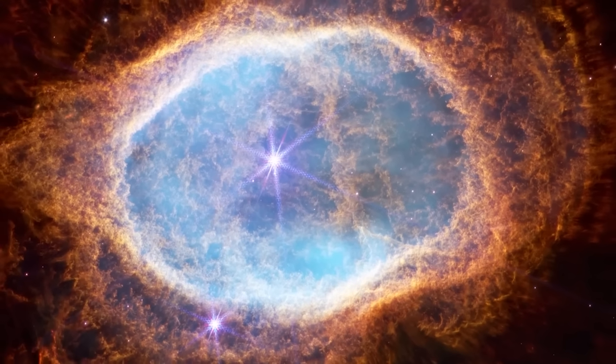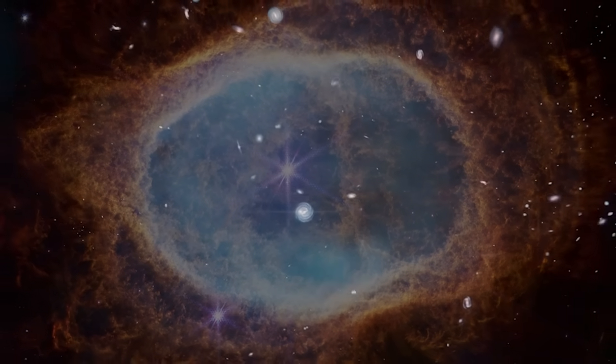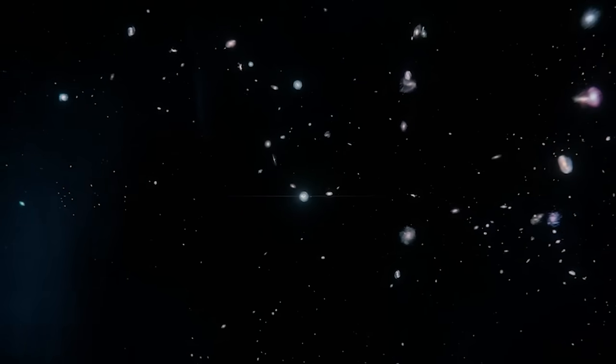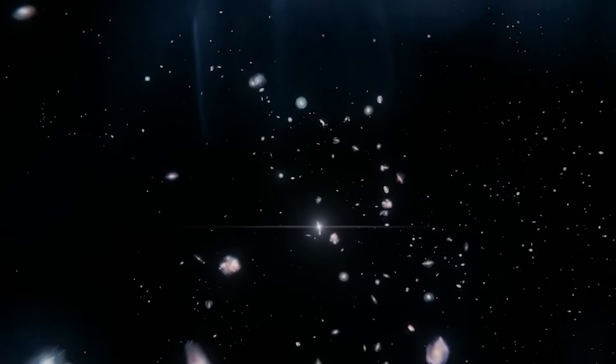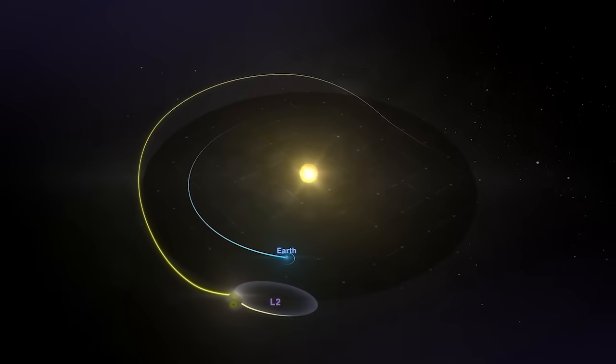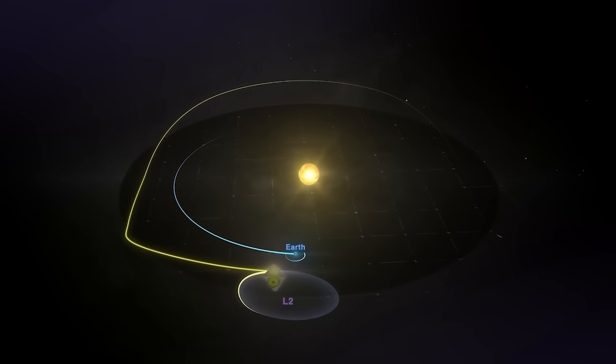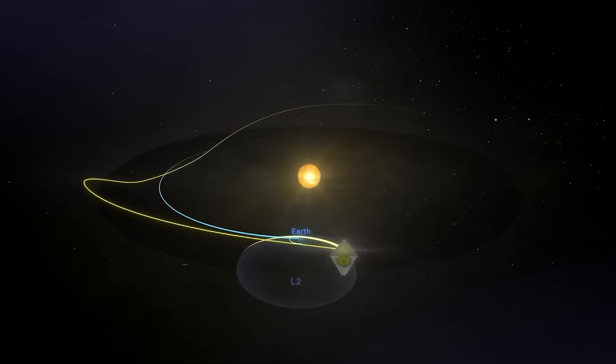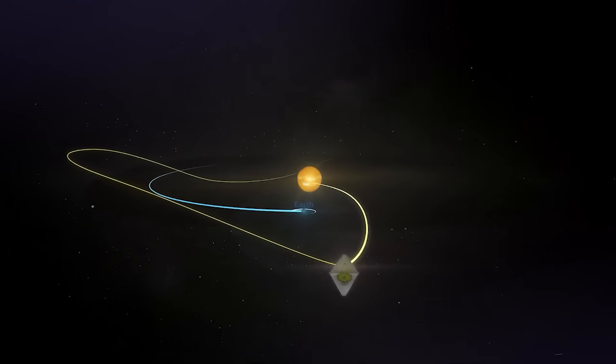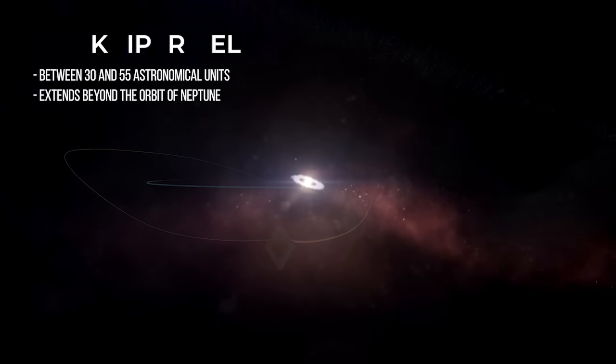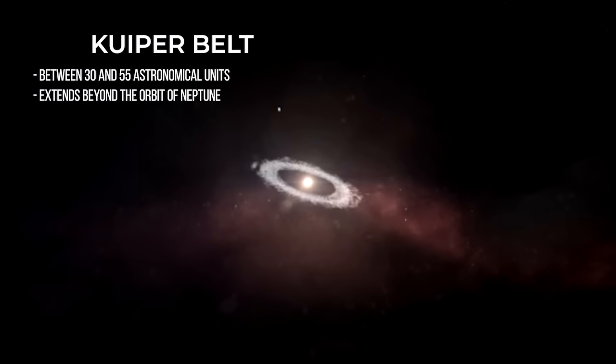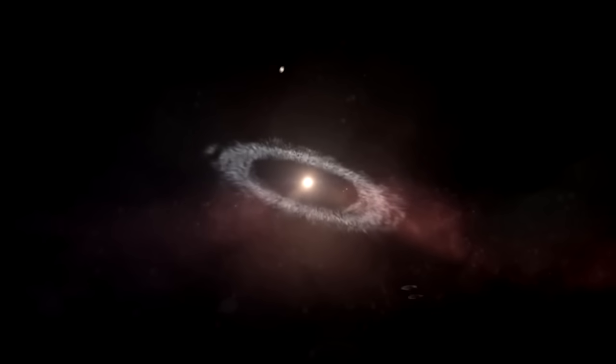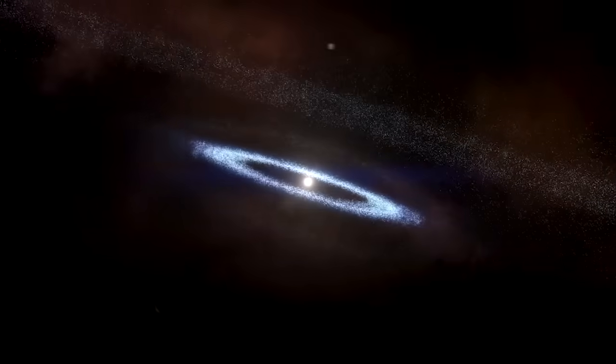The 2023 program of the James Webb is already busy. In particular, the telescope will turn its attention to objects in the Kuiper Belt. The Kuiper Belt is a ring-shaped area of the solar system that extends beyond the orbit of Neptune, between 30 and 55 astronomical units. Similar in shape to the asteroid belt, it is, however, 20 times wider, and 20 to 200 times more massive.